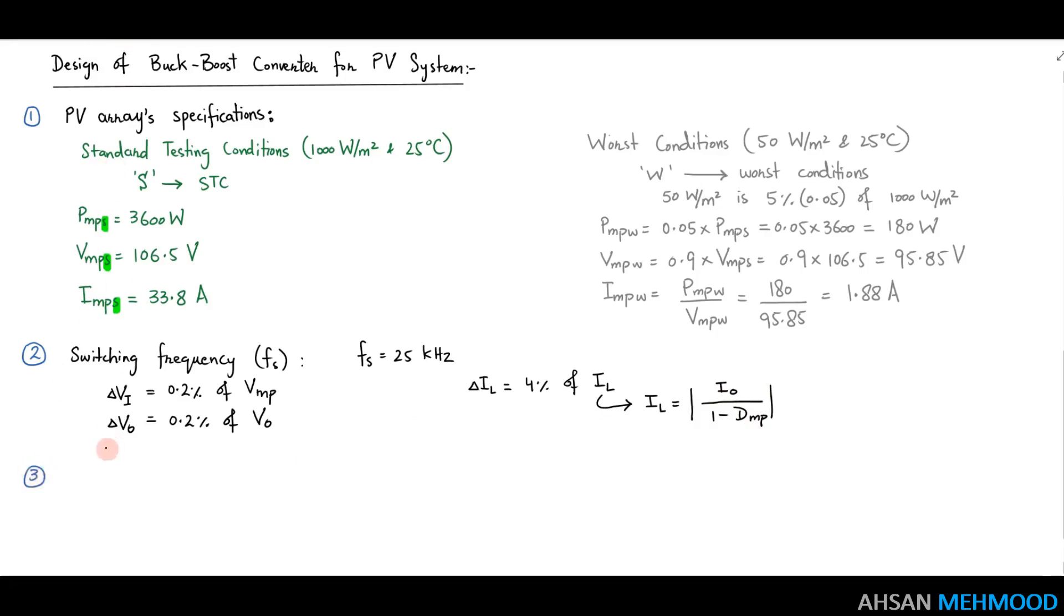The third step is to determine the PV array's internal resistance at MPP, which is indicated as RMP and equals VMP by IMP. This number is determined for both standard testing condition and worst-case scenario, with RMPs equaling 3.2 ohms and RMPw equaling 51 ohms respectively.